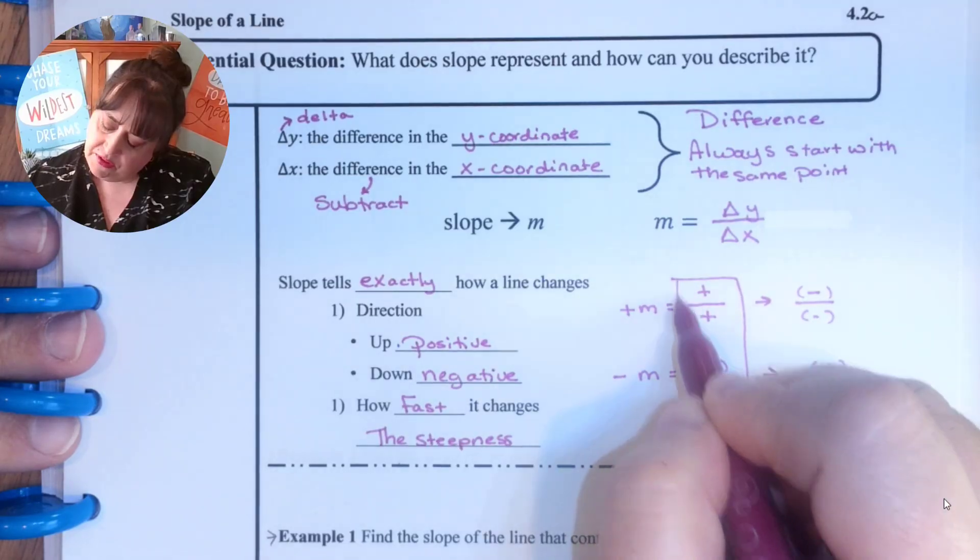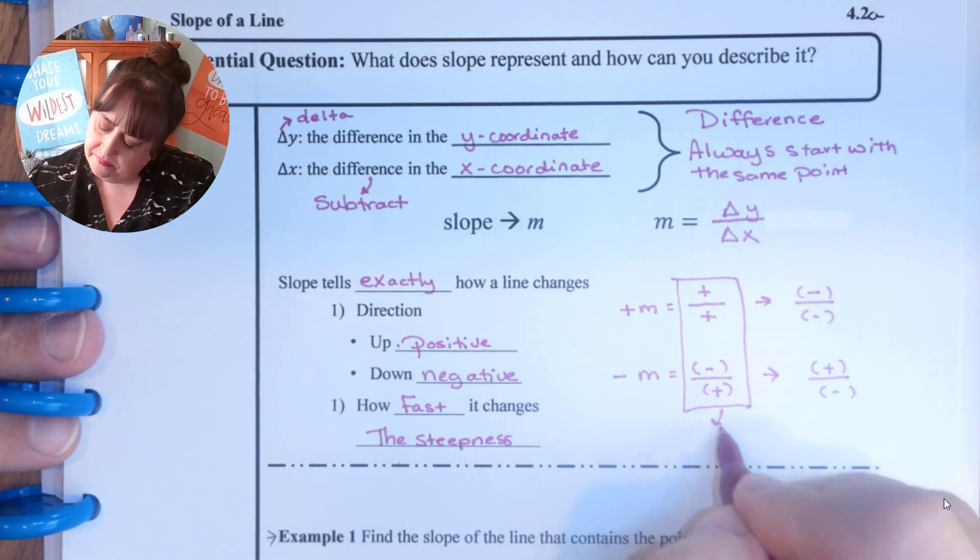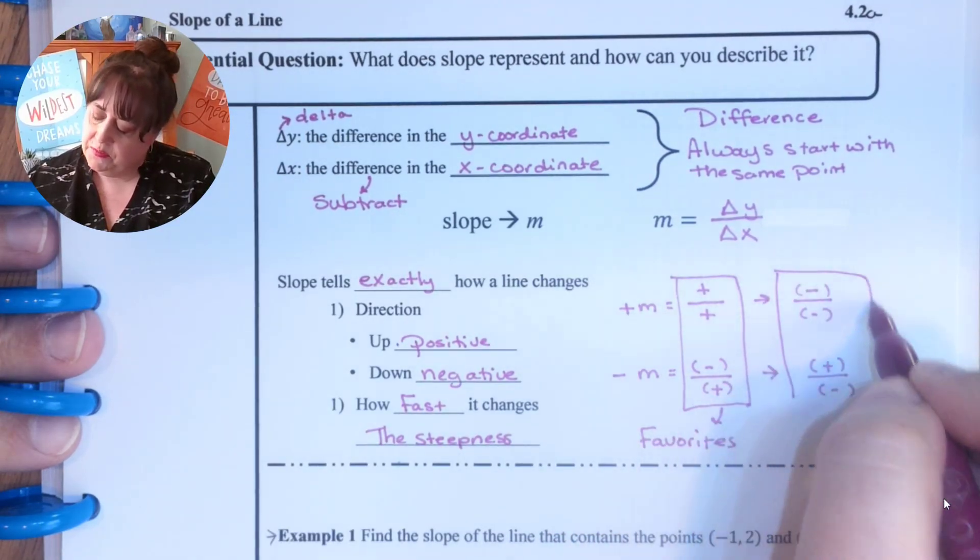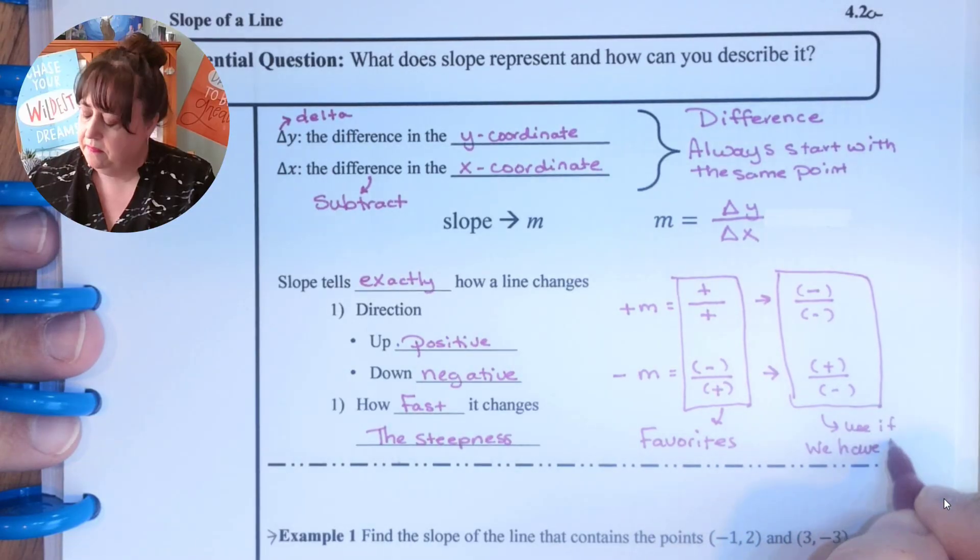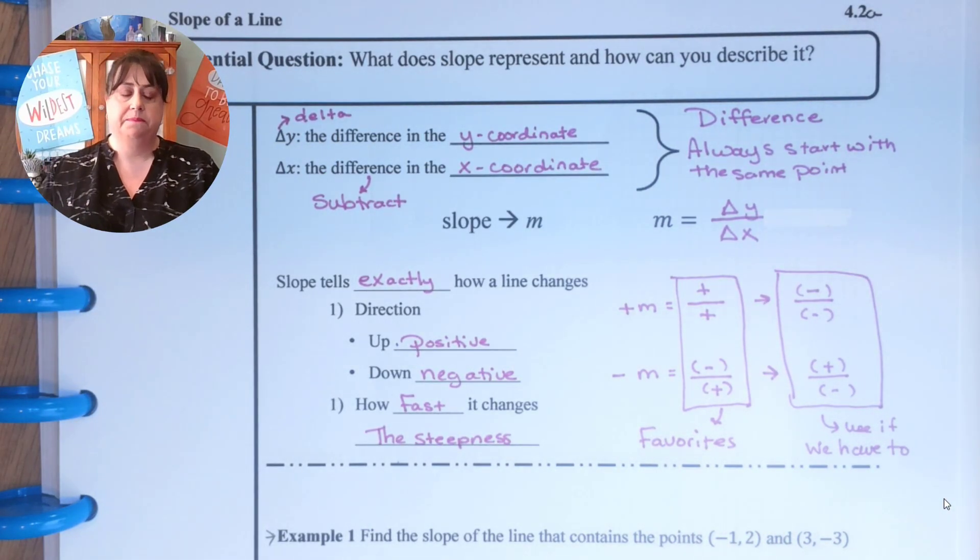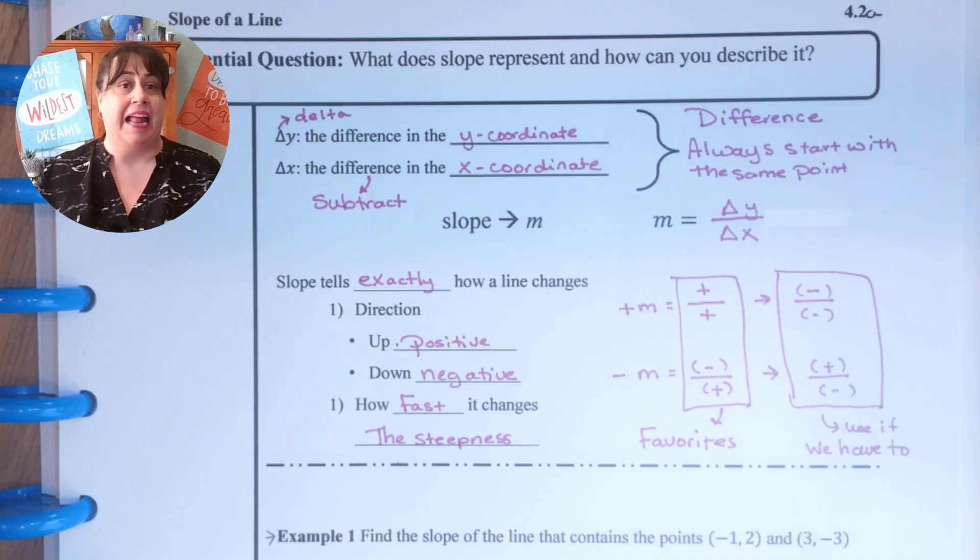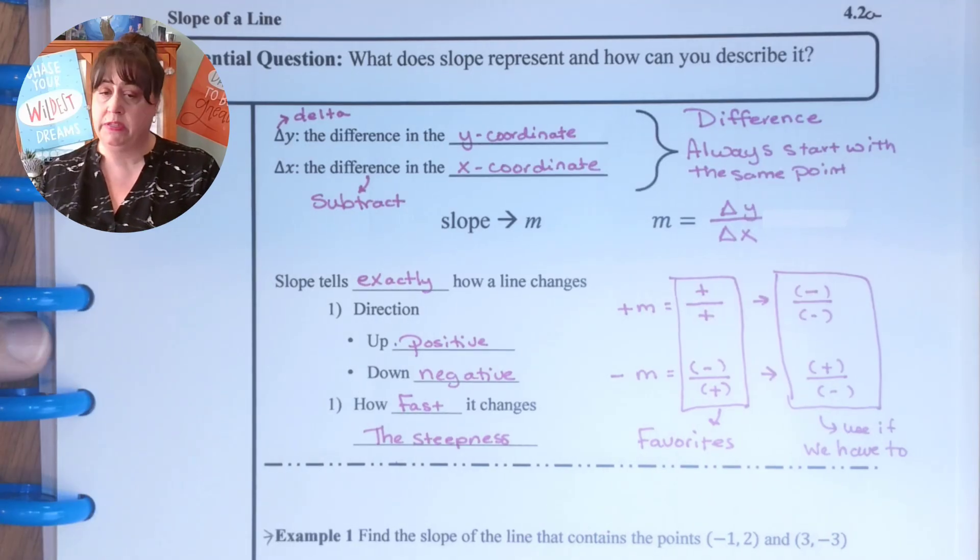These ones are our favorites. These ones we'll use if we have to, but they're definitely not our favorites. So that right there is a very quick definition and explanation of slope. It doesn't necessarily make a whole lot of sense when it's all written like that, but once we start using it, it makes a whole lot more sense.